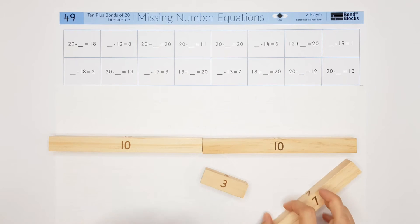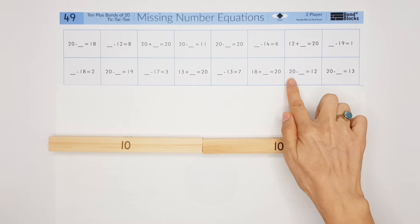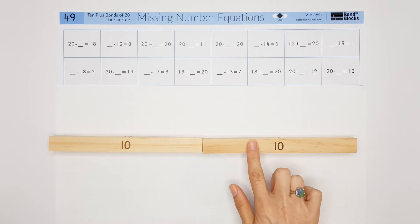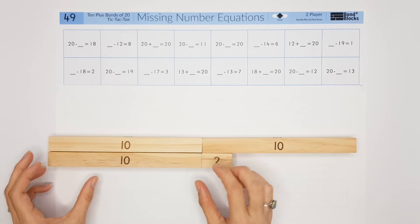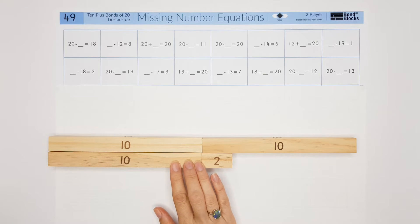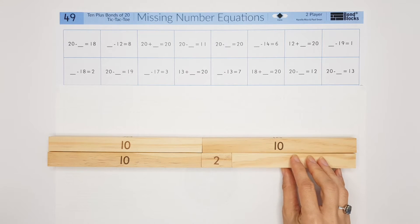The other type of subtraction equation: I know the whole of 20, I know one part of 12, so I stop and think what joins with the part of 12. And that would be, I add on or join the part of 8.